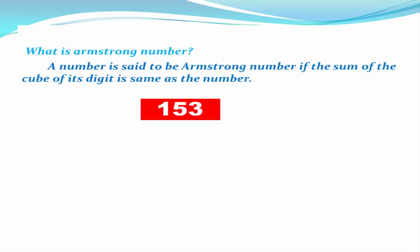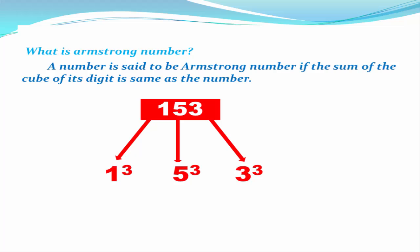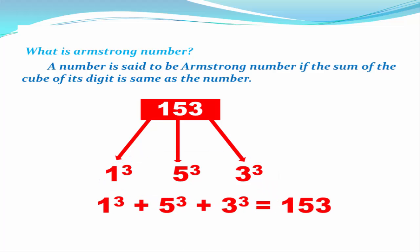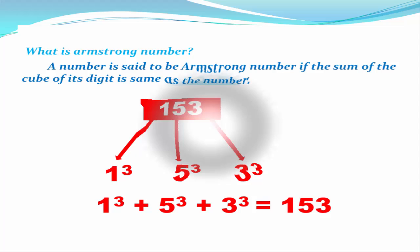The first thing you need to do is take each digit individually and cube them. So we get 1 to the power 3, 5 to the power 3, and 3 to the power 3. Next, add all these numbers and find the sum. If the sum is equal to the original number, then you can say it is an Armstrong number. As you can see, the sum is 153, which is equal to the original number, so 153 is an Armstrong number.